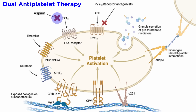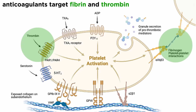Mechanistically, antiplatelet drugs like aspirin reduce the aggregation-amplification pathways associated with production of thromboxane A2, the endogenous agonist for the thromboxane receptor, while P2Y12 receptor antagonists antagonize ADP at the P2Y12 receptor. In contrast, anticoagulant drugs target the generation of fibrin and thrombin from their precursors, fibrinogen and prothrombin.